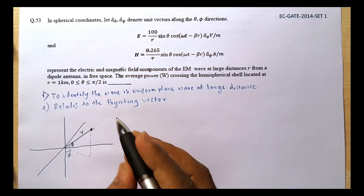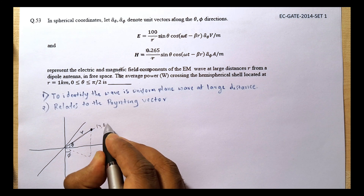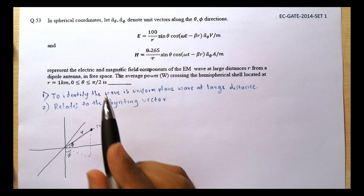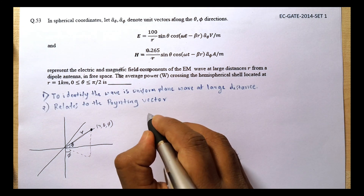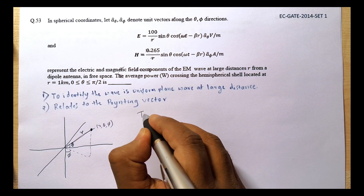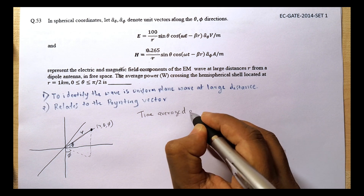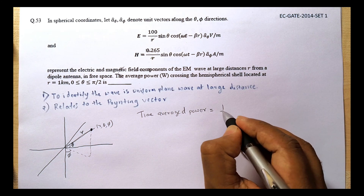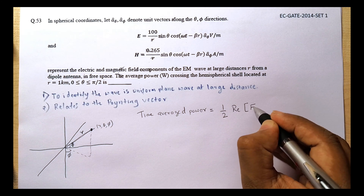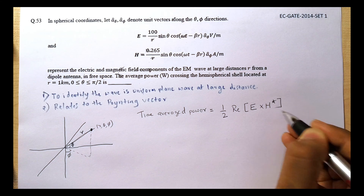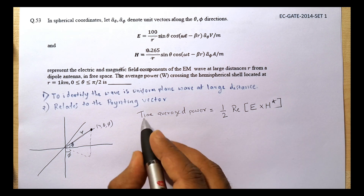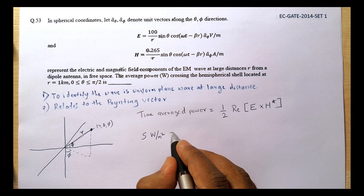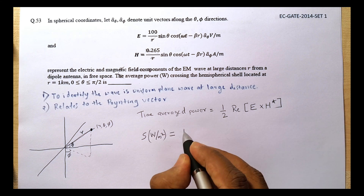A given point can be represented as (r, θ, φ) — this is the basis of spherical coordinates. What we have to find is the average power. From the Poynting vector theorem, the time-averaged power flowing through because of this uniform electromagnetic wave is given as: S = ½ Re(E × H*).